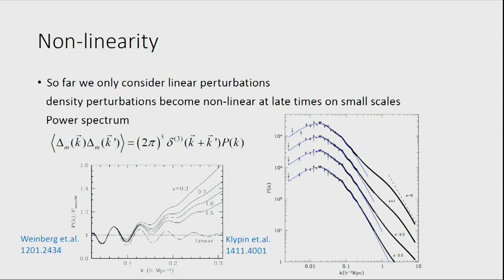Looking at the ratio of the full power spectrum to the linear power spectrum (with baryon oscillations removed), you see that as redshift becomes smaller, there is a strong enhancement of the power spectrum. This comes from nonlinearity. At lower redshift, you have to worry about all these nonlinear effects. The smooth line is the linear power spectrum with baryon acoustic oscillations removed, so the linear prediction is always normalized to one.